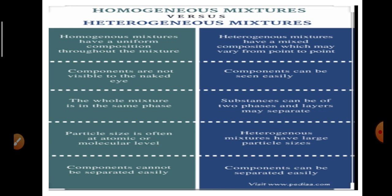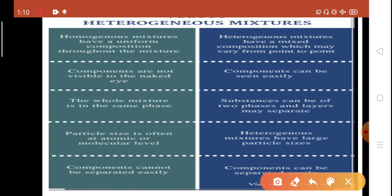Now, we have already read, there are two types of mixtures. One is homogeneous. Another is heterogeneous. So, let's see what are they. Homogeneous mixtures have a uniform composition throughout the mixture. Their composition remains same and uniform in the full mixture. While, heterogeneous mixtures have a fixed composition which may vary from point to point. From one point to another, its composition may differ. Components are not visible to the naked eye. Similarly, we cannot see the components separately.